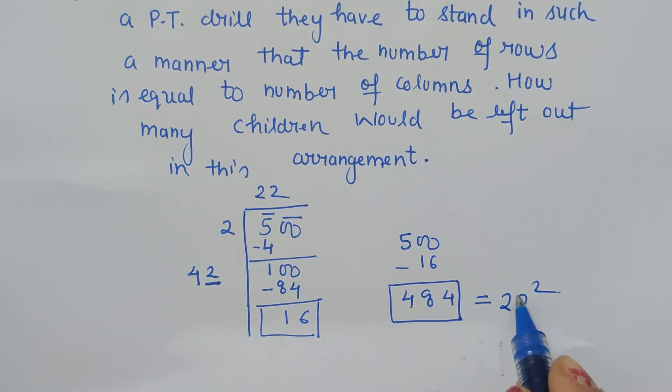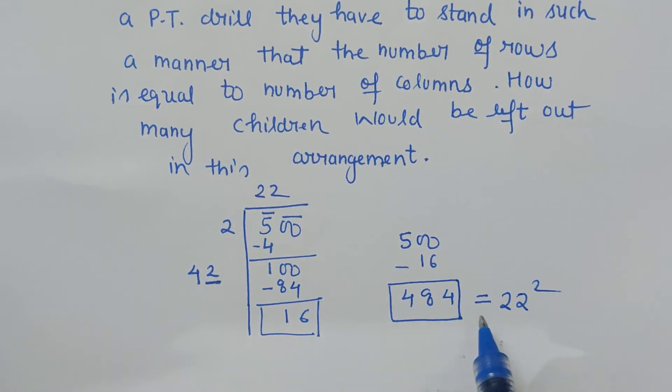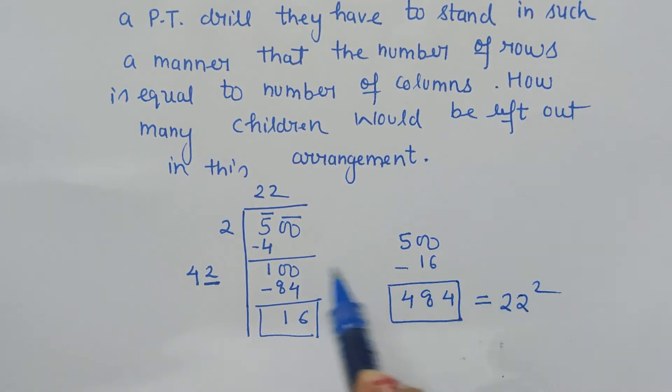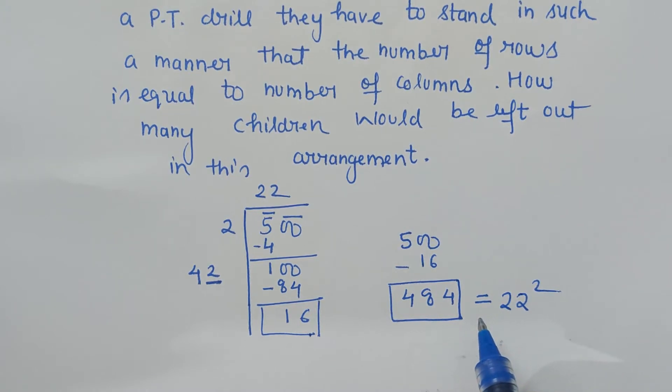The students will stand in 22 rows and 22 columns. This is the solution: the square root is 22, so we have to leave 16 children.